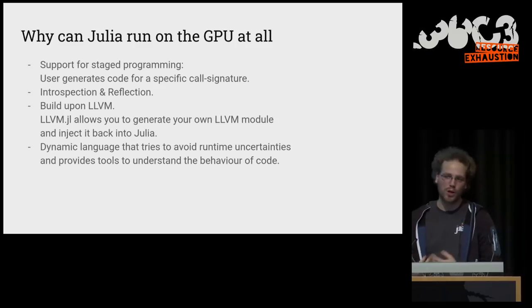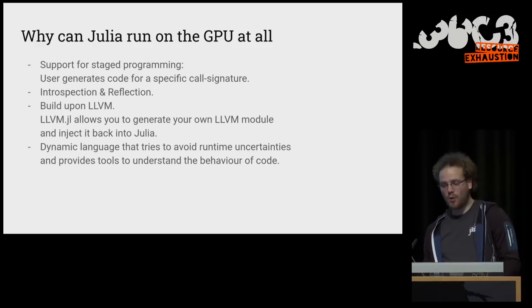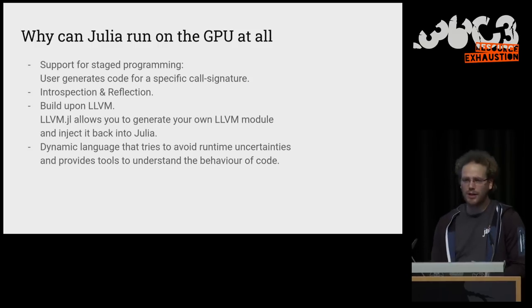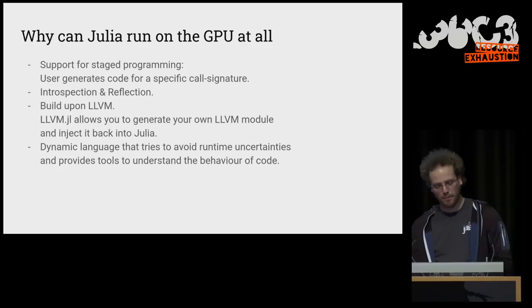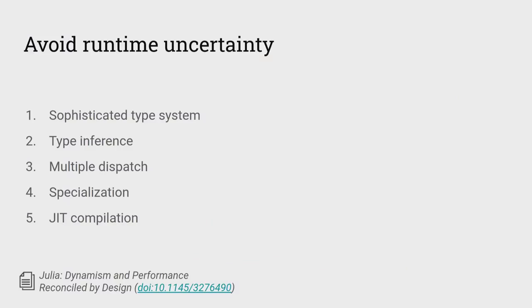Julia is a dynamic language that tries very hard to avoid runtime uncertainties. When you're writing code with a lot of runtime uncertainties, you get relatively slow performance — or as fast as Python. But if you work with the compiler and avoid runtime uncertainties, you can get very fast code and run on the GPU. If you can run your code on the GPU, you did your job well. Julia avoids runtime uncertainty through a type system that allows sophisticated reasoning, type inference, multiple dispatch helping to de-virtualize calls, and aggressive specialization and just-in-time compilation.